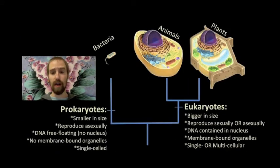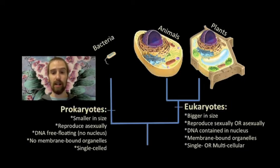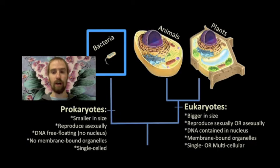Earlier in the year, we learned about the two basic kinds of cells: prokaryotic cells and eukaryotic cells. Prokaryotes, like this bacterium here, are smaller and simpler overall. They reproduce asexually, they contain no nucleus or any other membrane-bound organelles, and they are always single-celled.